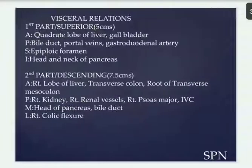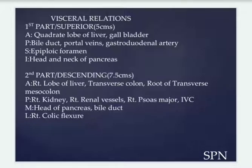Next, visceral relations. The first part D1 is about 5 centimeters long. Anteriorly there is the quadrate lobe of liver and gallbladder. Posteriorly: the gastroduodenal artery. Superiorly: the epiploic foramen. Inferiorly: head and neck of pancreas.